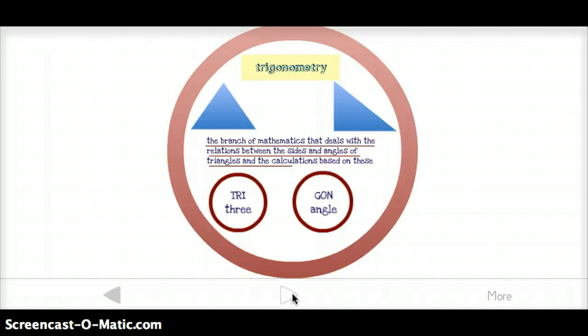I hope that you highlighted all those roots. You might go back through and check really quick. There's bar, geo, kilo, gnome, ode, para, ped, peri, sim, tach, tri, and gon. Okay? Y'all have a great evening. Bye.